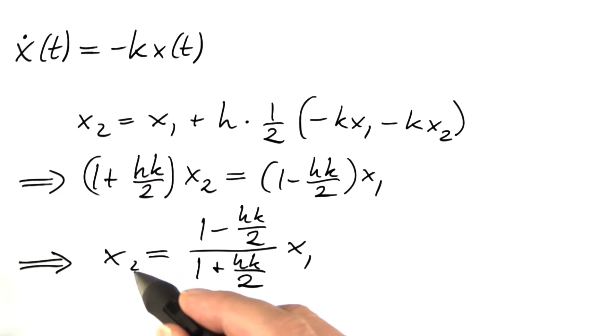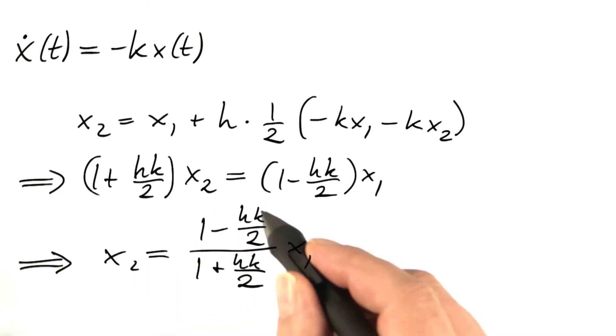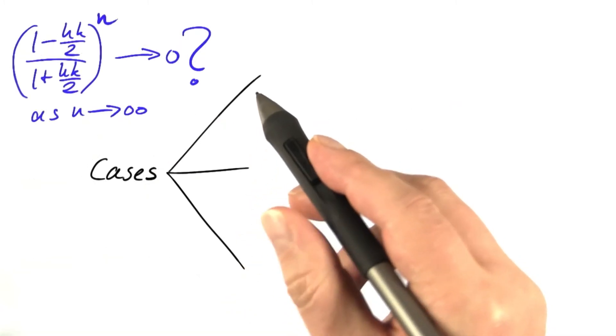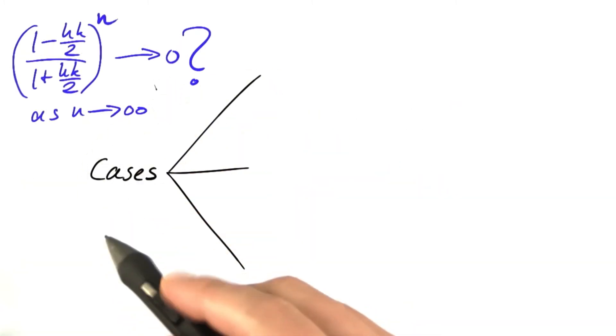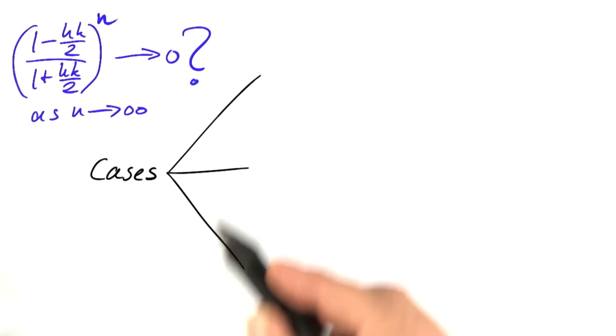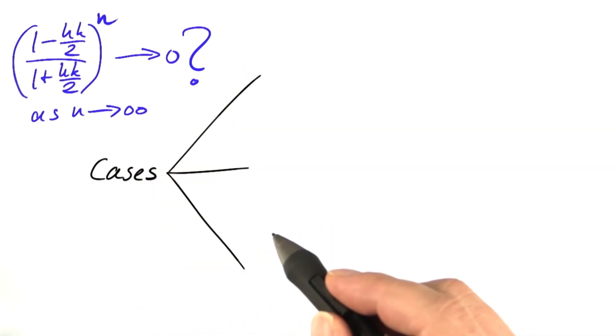If we want to go from x2 to x3, we again multiply by that factor and so on. So in the end, we get powers of this factor. So the question is, does the nth power of this expression converge to 0 as n tends to infinity? To check that, one can analyze three different cases.